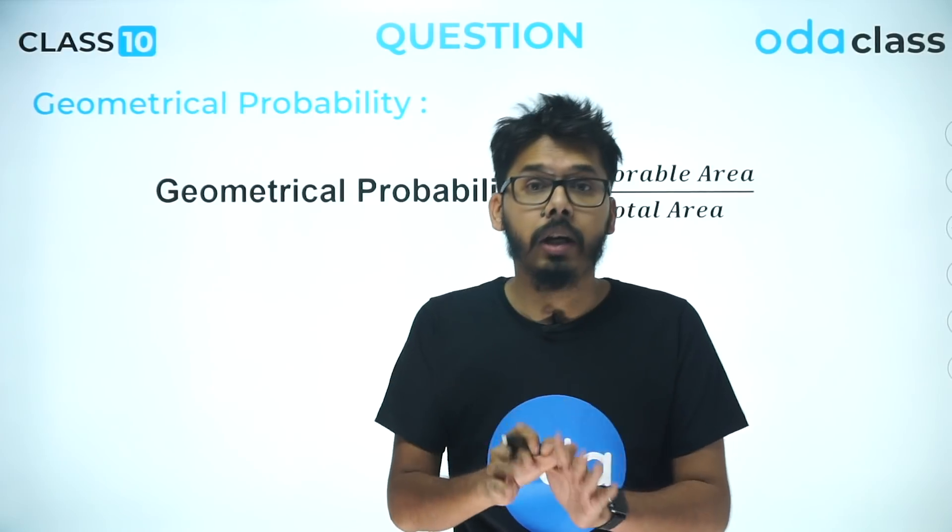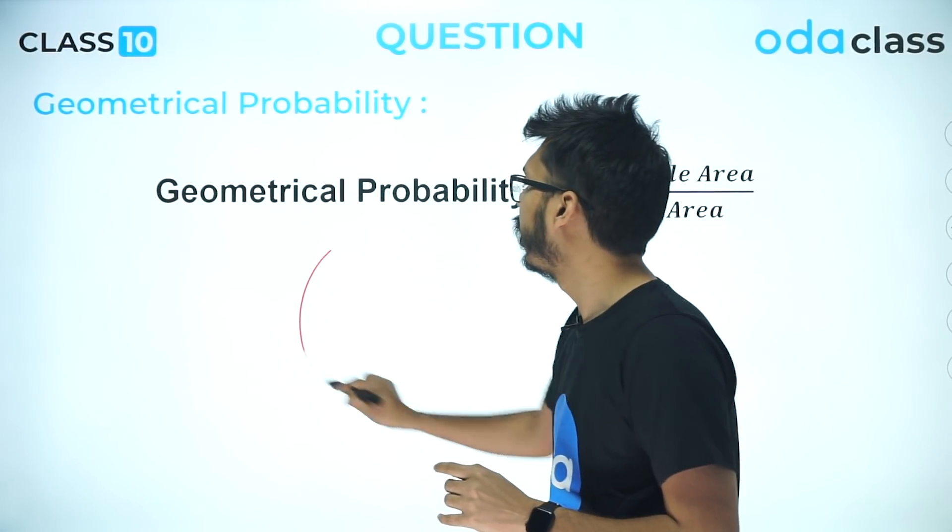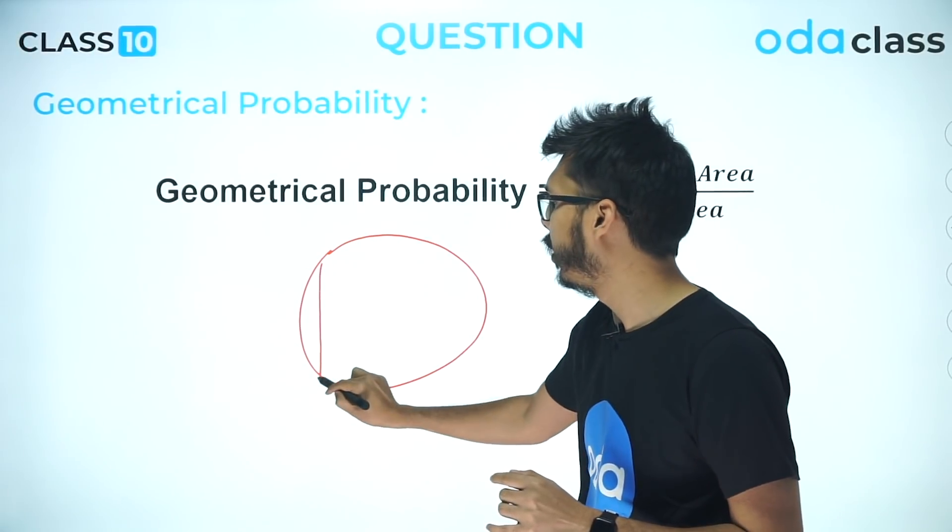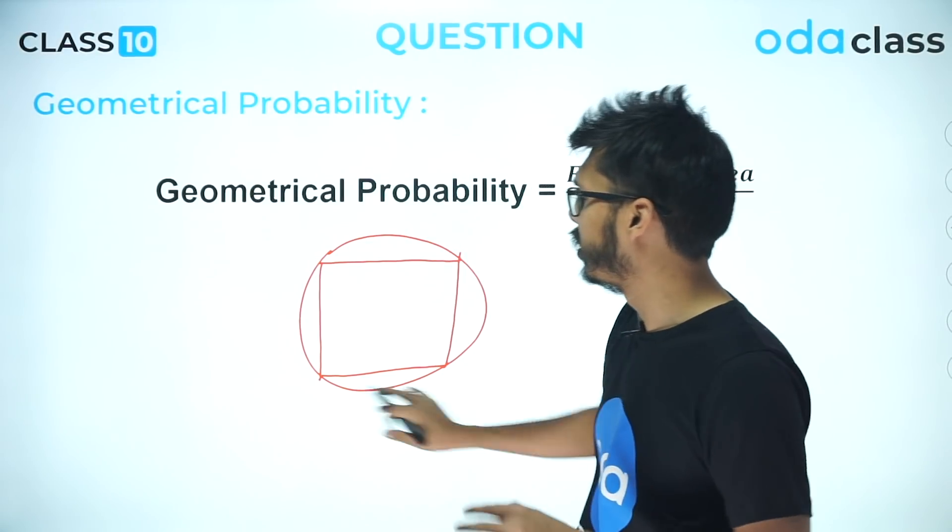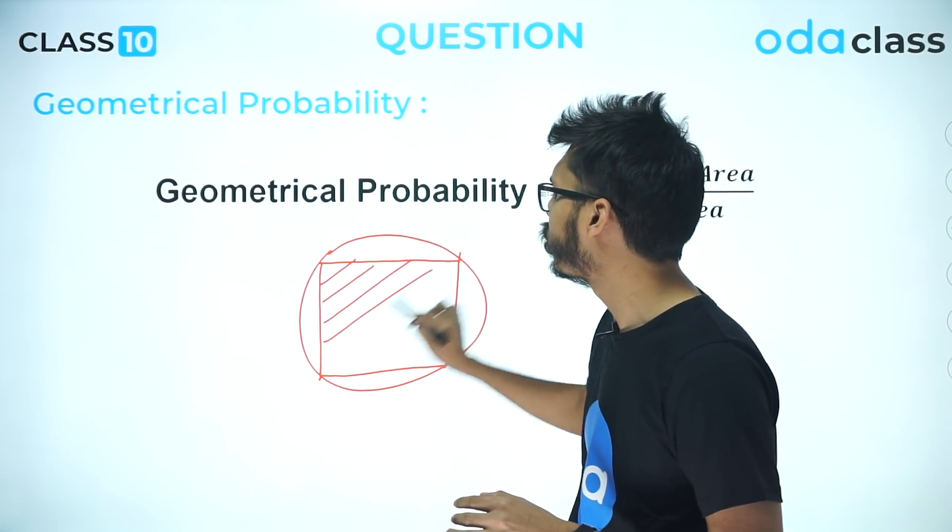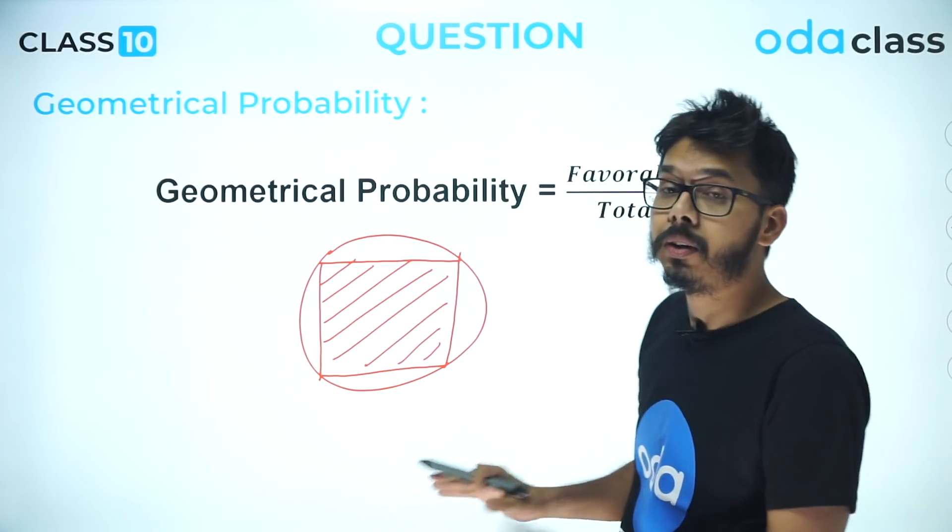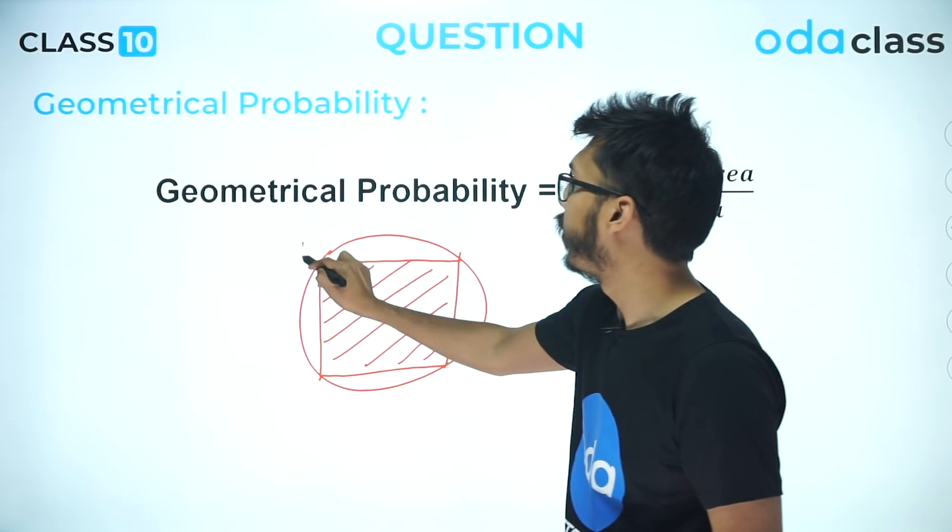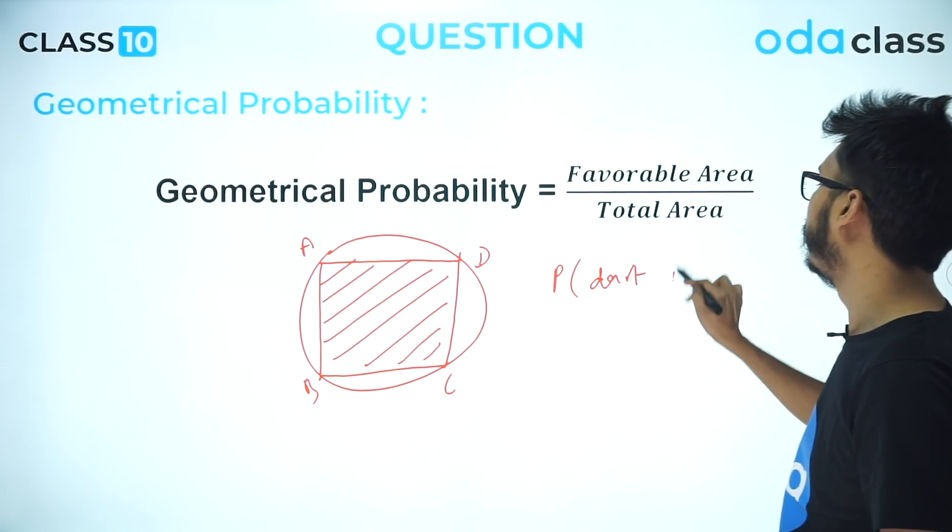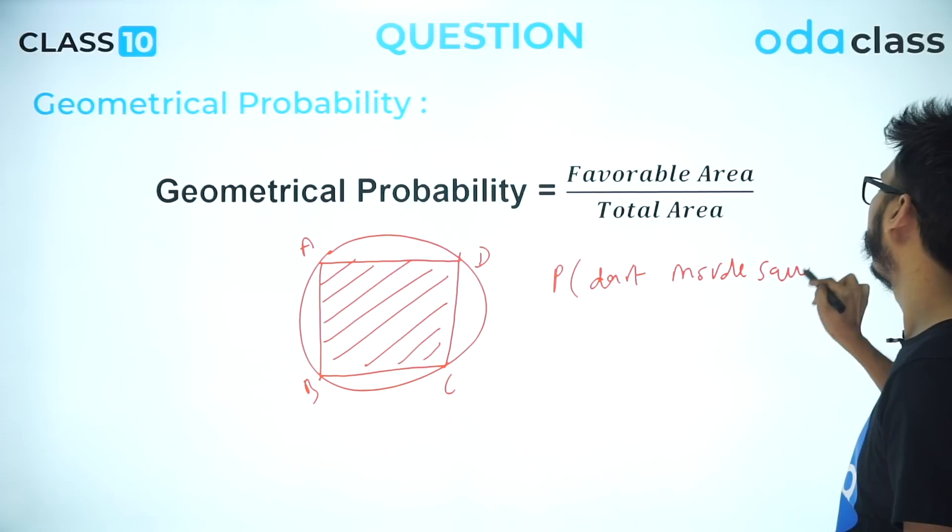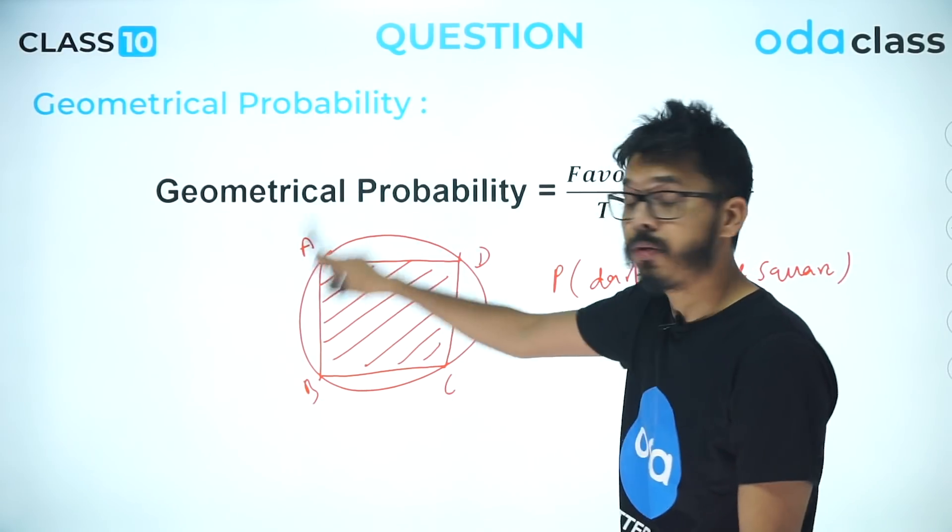For example, if I talk about a circle and inside this circle there's a square, and I'm throwing a dart in this circle, and I want that dart to land inside this square only—given that the dart will always land inside the circle—if I want to find out the probability of the dart landing inside the square, then you will say that if I name this as ABCD, the probability of the dart inside the square will be equal to the area of the square divided by the area of the circle.